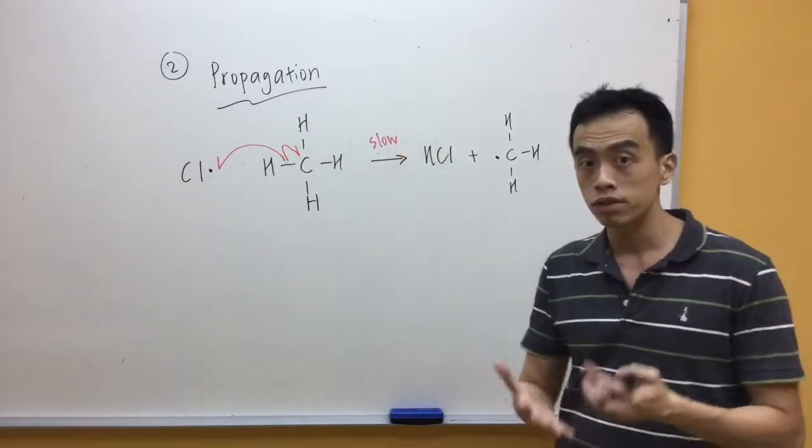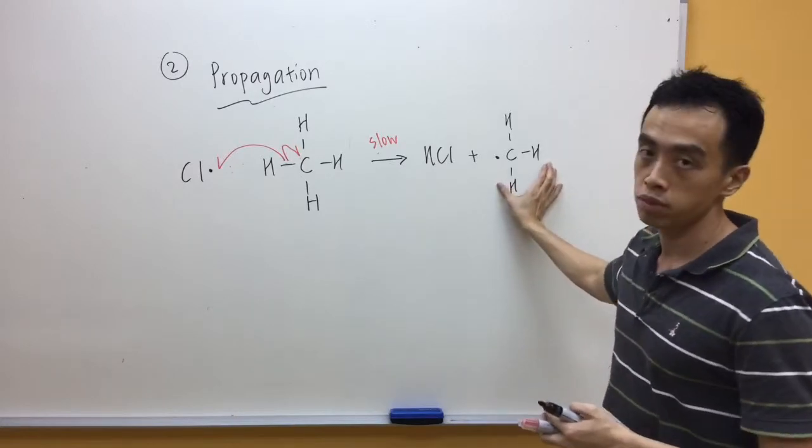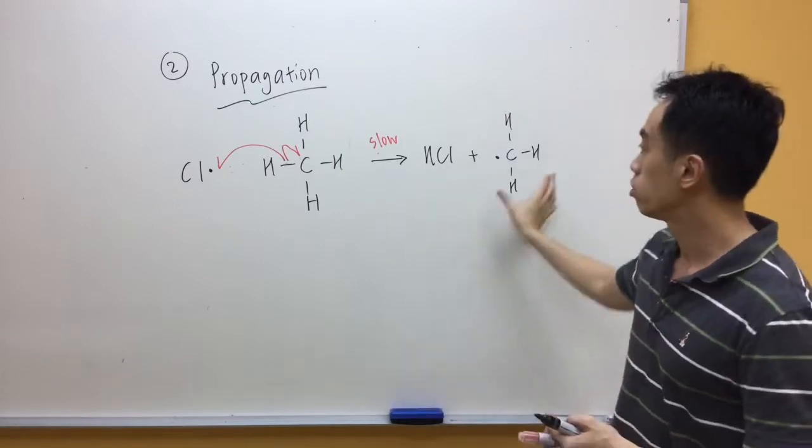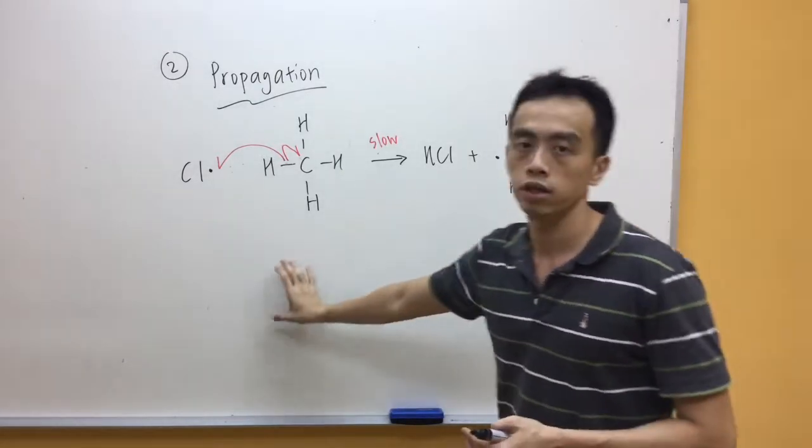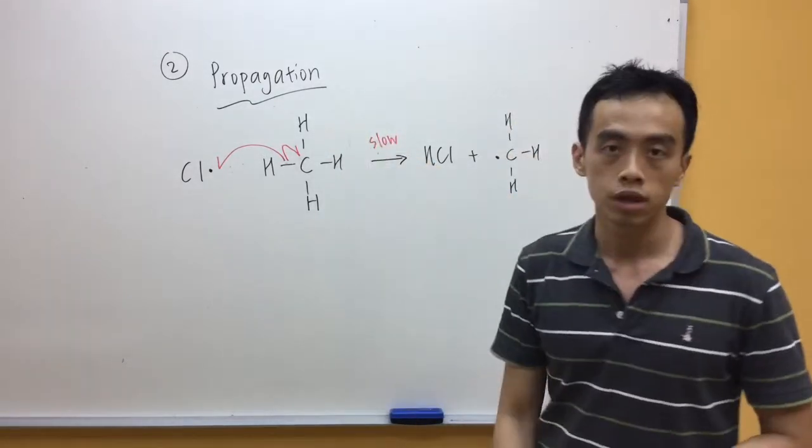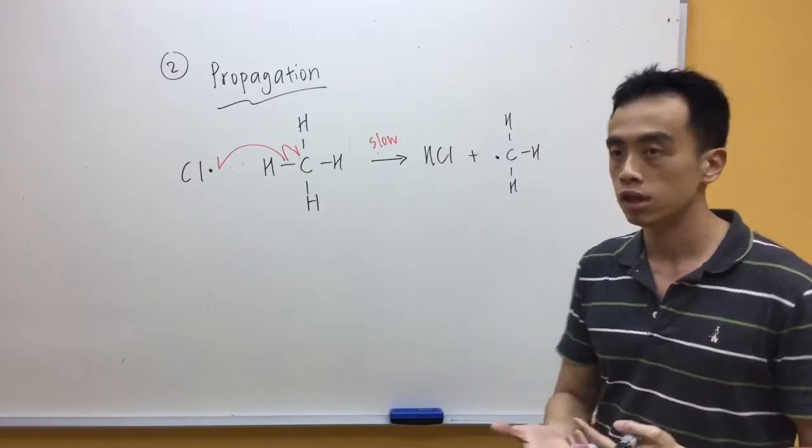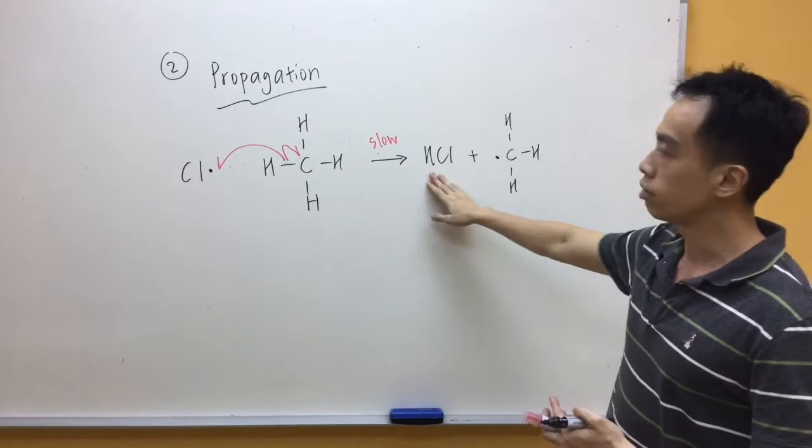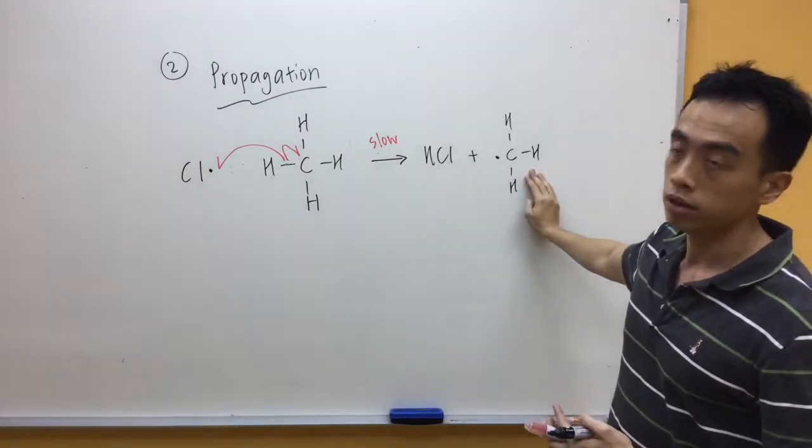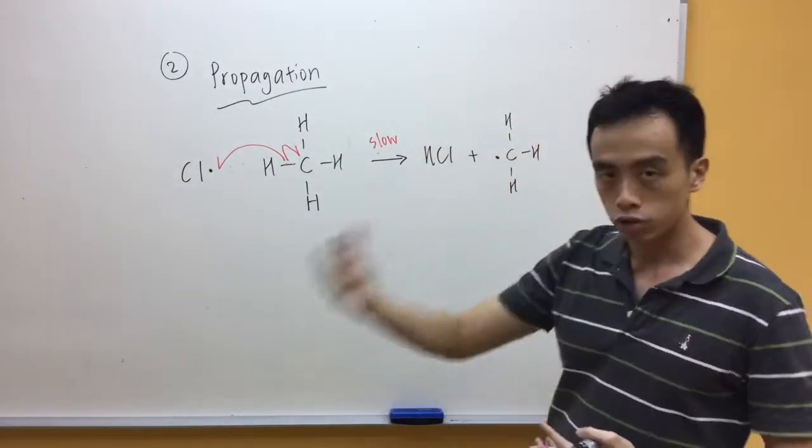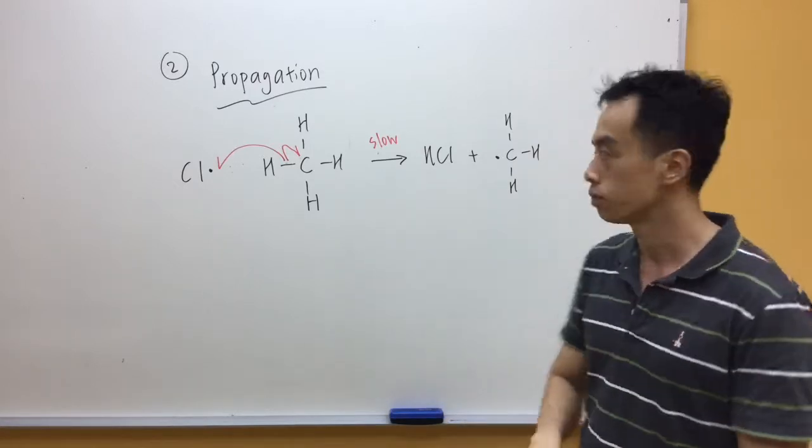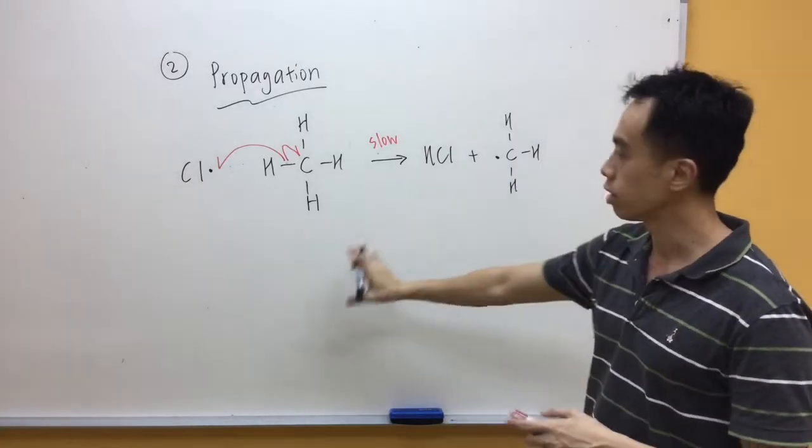Now what we notice next is, now this methyl becomes the radical. So we will continue with the reaction. So this methyl group will be involved in the next step. That's why it's called a propagation step, because in general propagation step is when you have a radical reacting with something stable, you form a stable product, it generates another radical. And then this radical will continue with the reaction. That's why it's considered as a propagation of reaction. So we will draw this methyl group below.